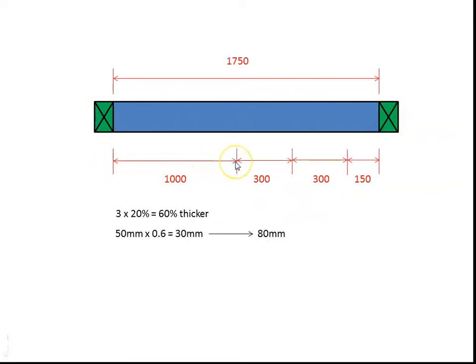Up to a metre long, same size as all the others. Over a metre long, each section of 300mm or part thereof is another 20% thicker.